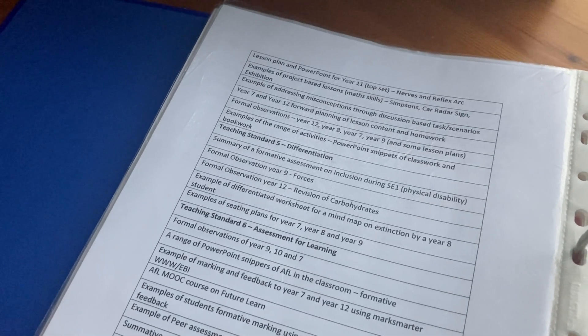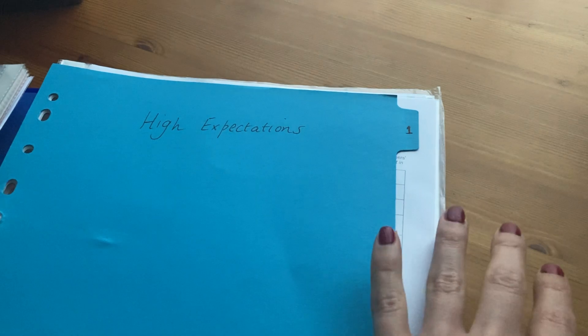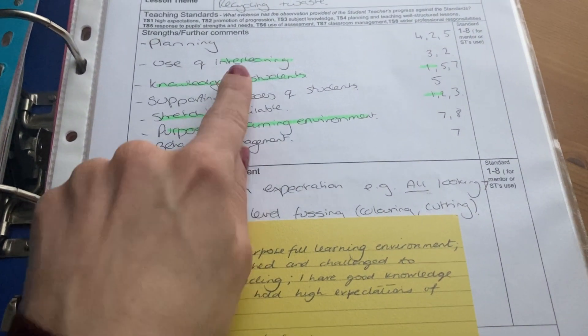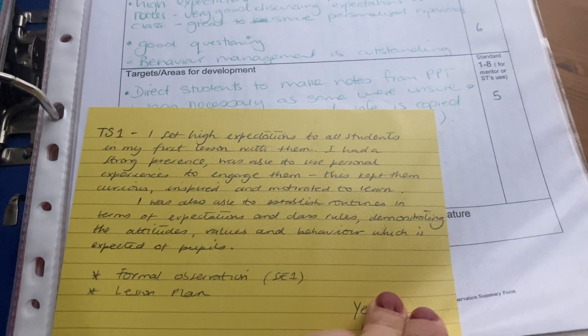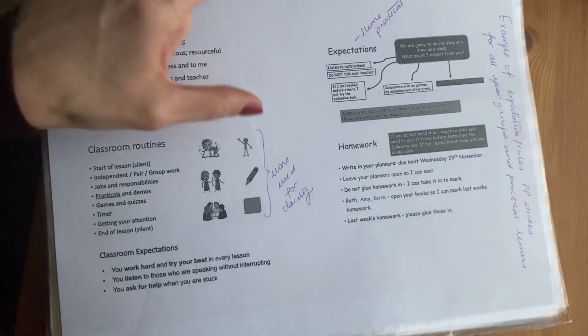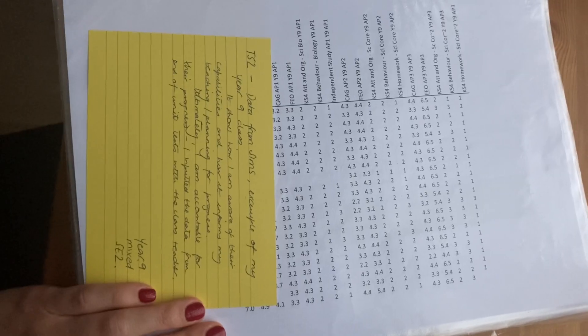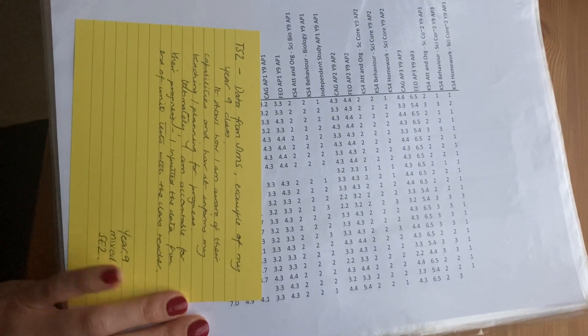For most teaching standards I have a handful of pieces of evidence. I used separate binders with the title of the teaching standard written down to separate them throughout the folder. Here is an example of how I used formal observation notes from a teacher who observed my lesson — I highlighted what was useful for this piece of feedback and then wrote on an index card how that meets particular criteria for that teaching standard. I also used different slides from PowerPoints showing how I set expectations for different types of activities and annotated them to show how they meet the criteria.